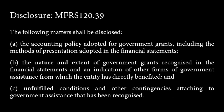These are the disclosures required by the standard. We need to disclose the policy in which we treat government grants, including the way we present them. We also need to disclose the nature and extent of the grants. If we could not fulfill conditions attached to the grant, we need to disclose that fact. And if the grant comes with contingencies, we must disclose that too.